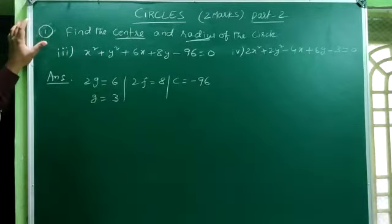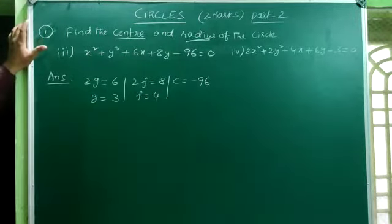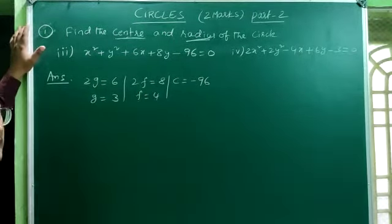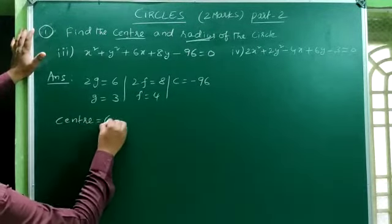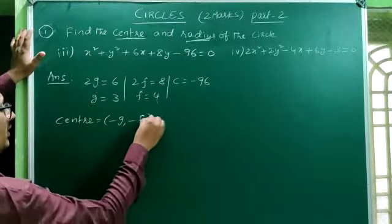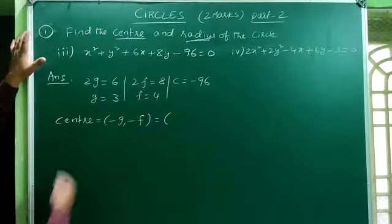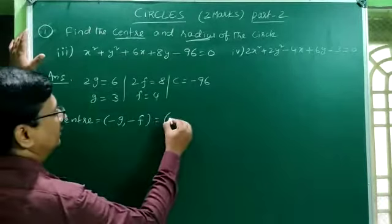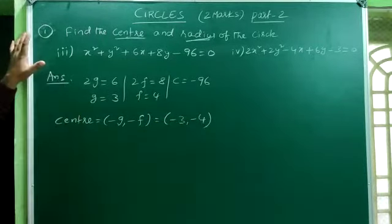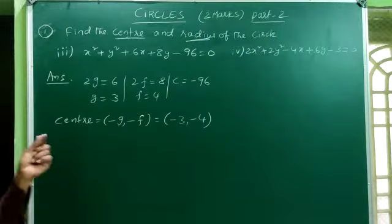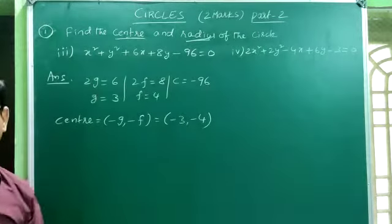2g = 6 means g = 3. And f = 8/2 = 4, c = −96. The center is (−g, −f) with g = 3 and f = 4, so changing the signs gives center = (−3, −4).